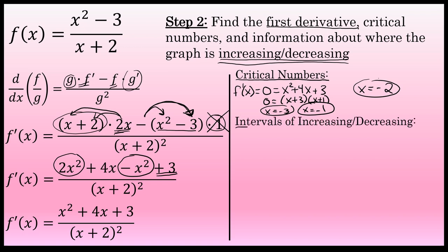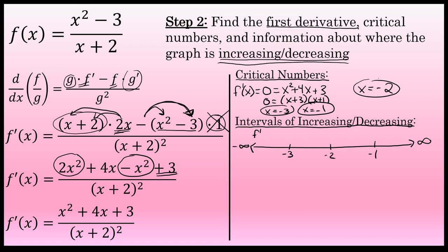We can use those values to determine exactly where this function has intervals of increasing and decreasing by making a number line representing the x values in the domain. Placing the critical numbers on this number line breaks it into four intervals. In each interval, the graph will either be increasing or decreasing throughout. To determine which, I'll choose a test value in each interval — for example, negative 4 in the first interval from negative infinity to negative 3.